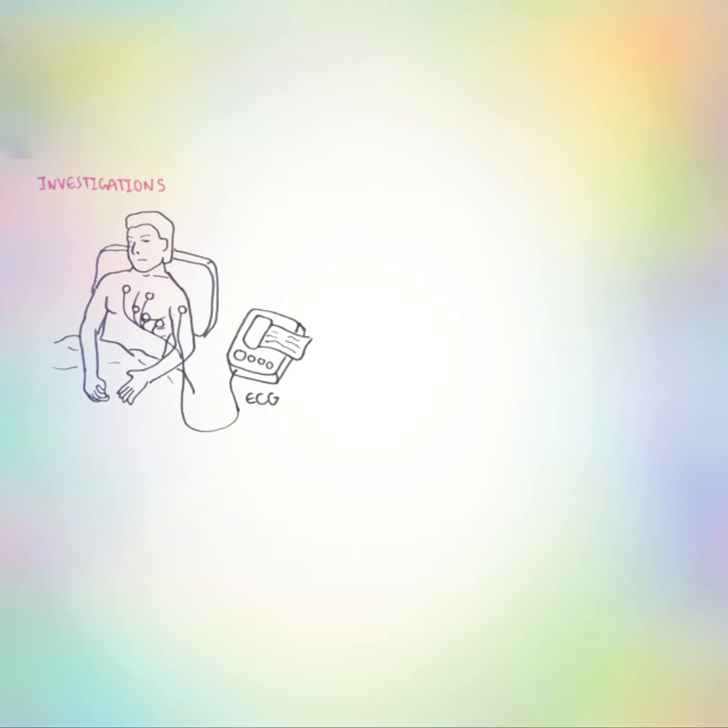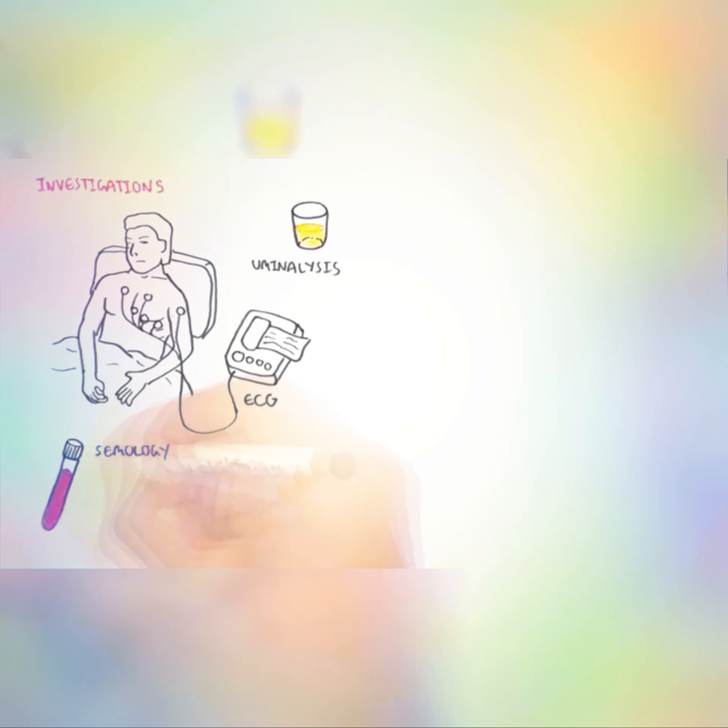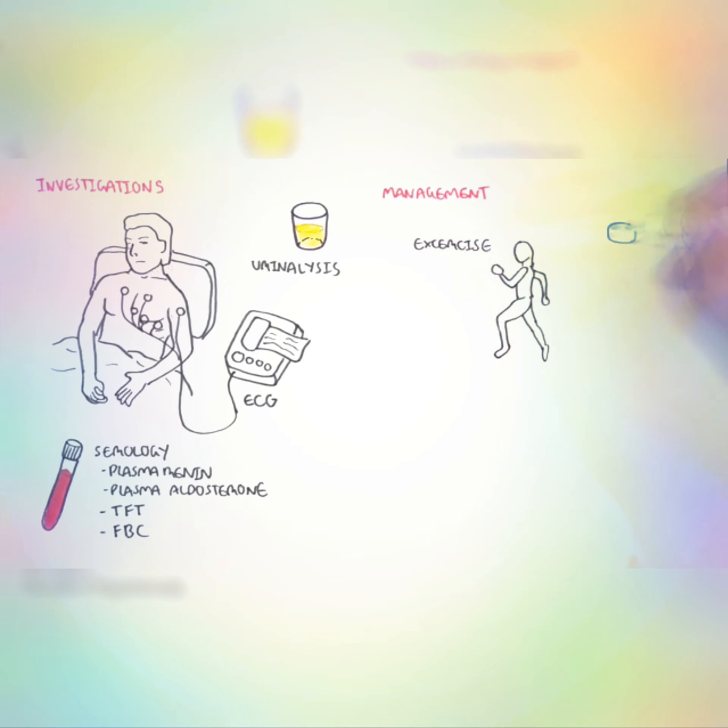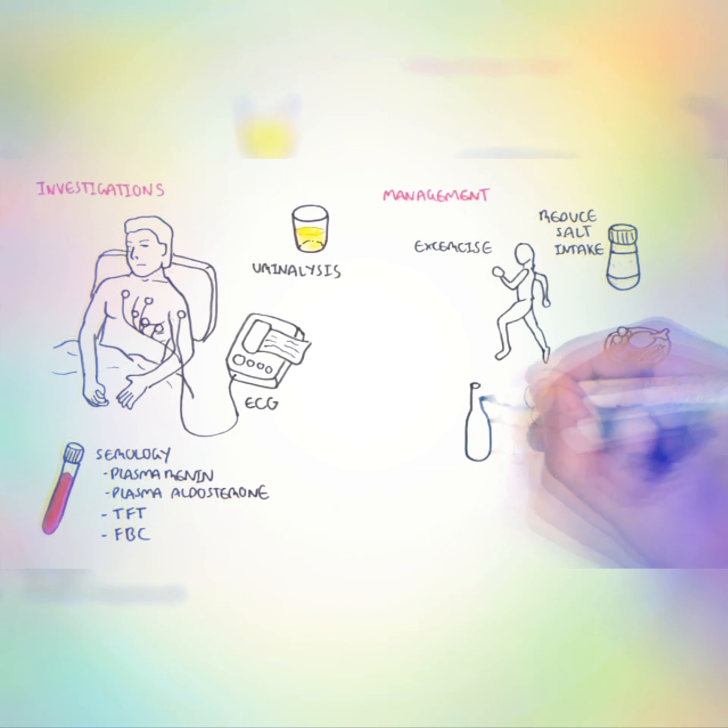Some investigations that should be performed in a patient with hypertension include ECG, or electrocardiogram to check for cardiac function, urinalysis for renal function, and serology tests such as plasma renin, plasma aldosterone, the thyroid function test, and full blood count to rule out other differentials and to monitor hypertension.